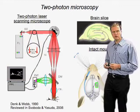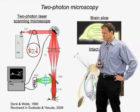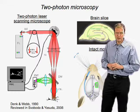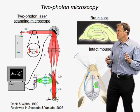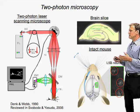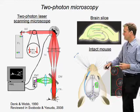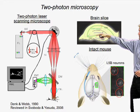This problem was essentially overcome by two-photon excitation microscopy, invented about 20 years ago. It is a laser scanning microscopy technique, and while I don't have time to explain how it works, suffice it to say that it brings all of the wonderful advantages of fluorescence microscopy to imaging deep in scattering tissue. It's a laser scanning microscope that provides high resolution and contrast when imaging synapses deep in scattering tissue, like a brain slice or even in an intact mouse.